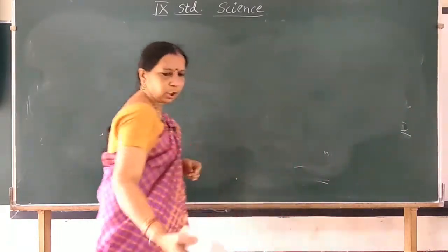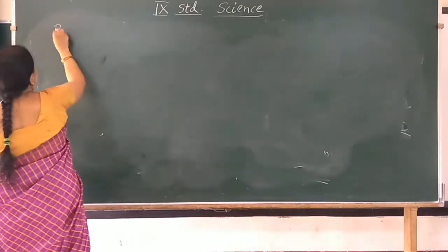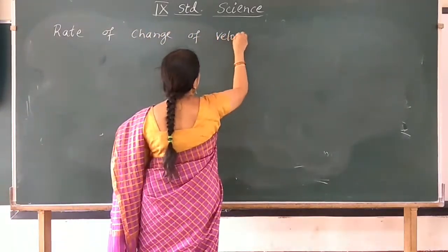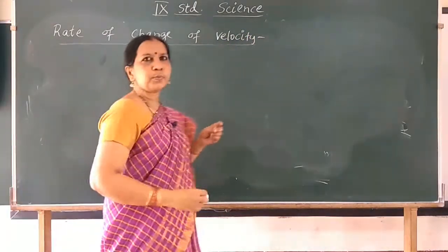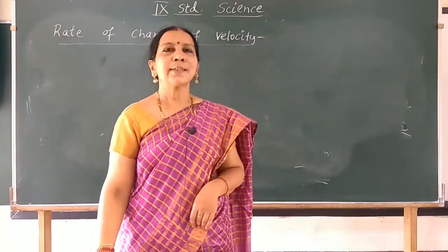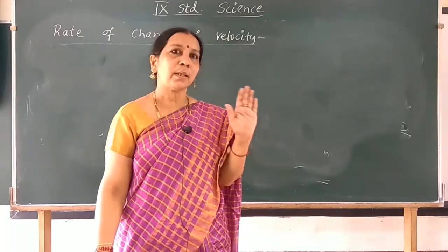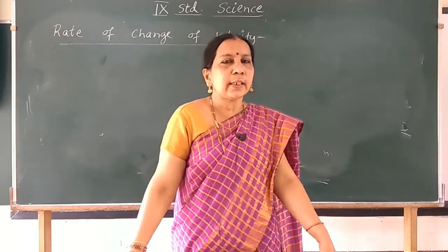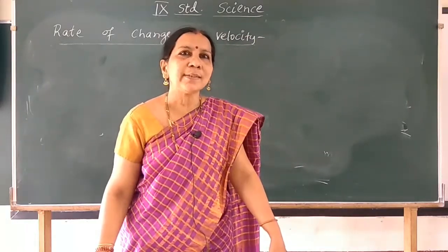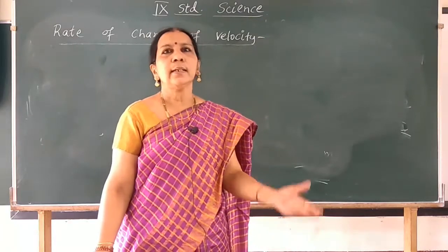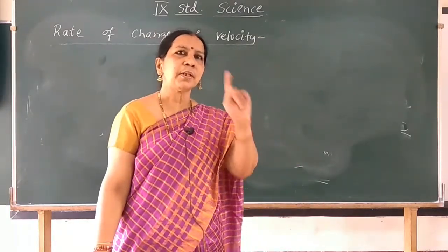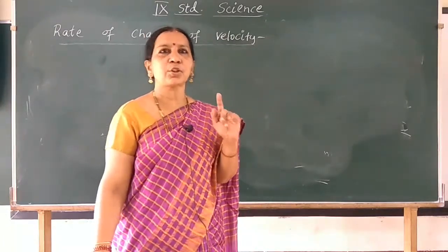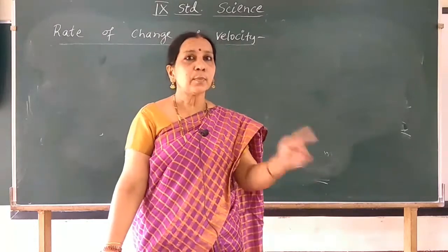Let us move on to another topic: rate of change of velocity. When an object is travelling in uniform motion, its velocity remains constant. So the change in velocity at any time interval is zero. Suppose if an object is in non-uniform motion, its velocity changes — the change in velocity of an object in non-uniform motion is not zero; it changes with respect to time.